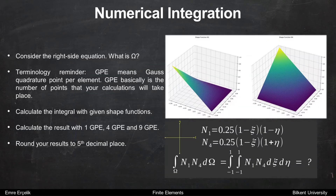Let's start with the numerical integration example. Consider the right side equation. What's omega? As a terminology reminder, GPE means Gauss quadrature points per element. GPE is basically the number of points at which your calculations will take place.